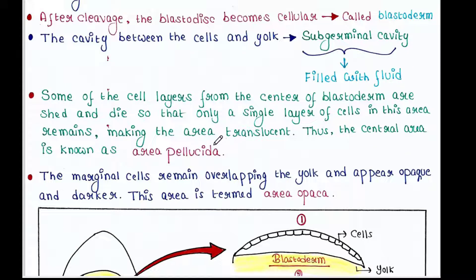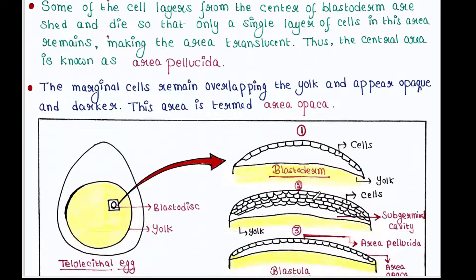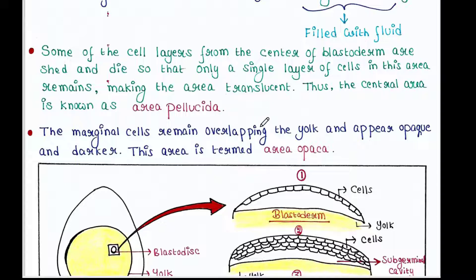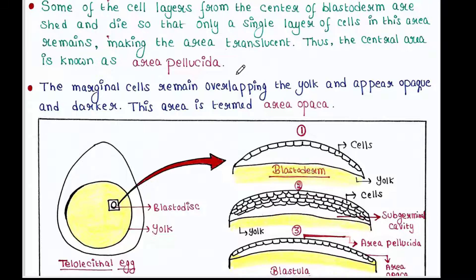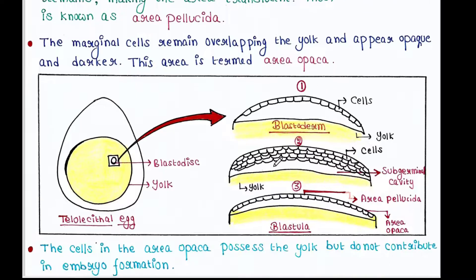Some of the cell layers from the center of the blastoderm are shed and die, so that only a single layer of cells in this area remains, making the area translucent. Thus the central area is known as the area pellucida — pellucida means transparent. The marginal cells remain overlapping the yolk and appear opaque and darker; this area is termed area opaca — opaca means opaque.